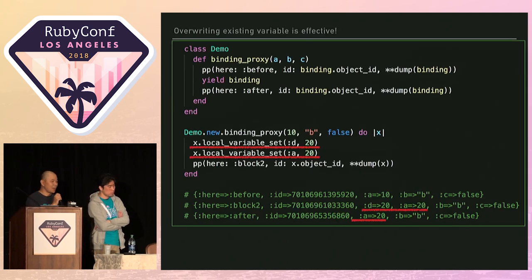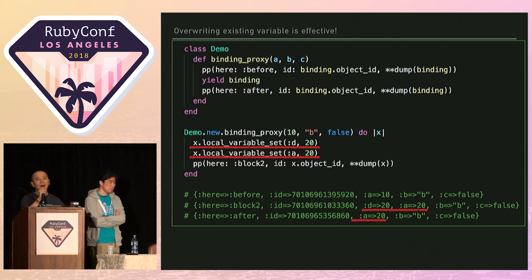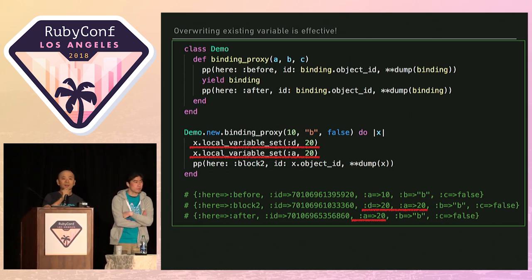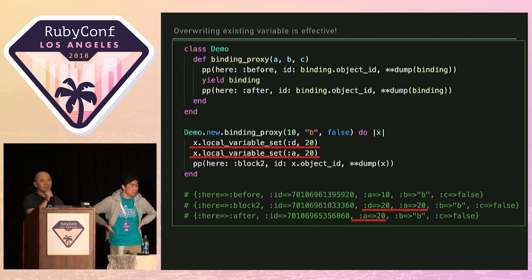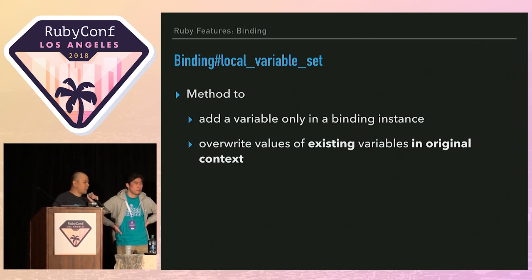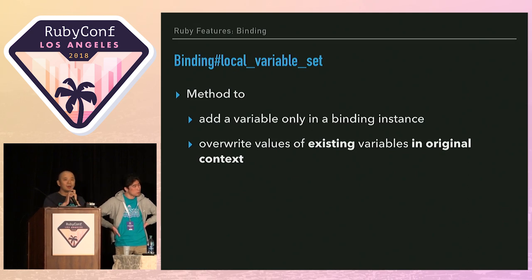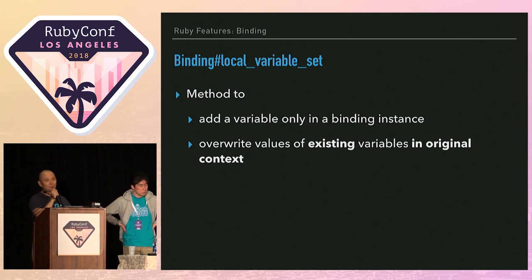But interestingly, this code does local_variable_set on both local variable d and a with the integer value 20. The result shows that we can see both local variable d and a with integer 20, and also in the original context we can see local variable a with integer 20. This means binding's local_variable_set method either adds a variable only in the binding instance, or overrides values of existing variables in the original context.